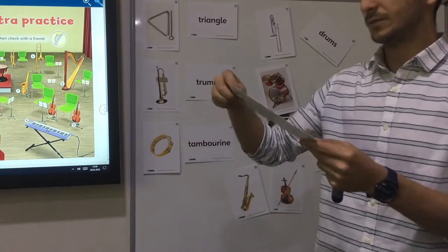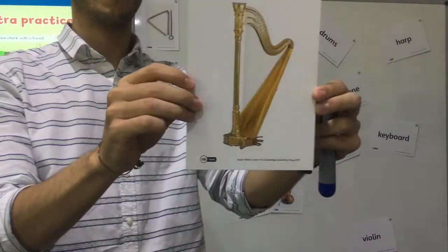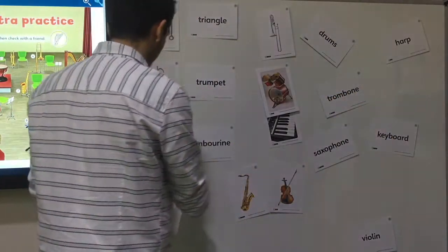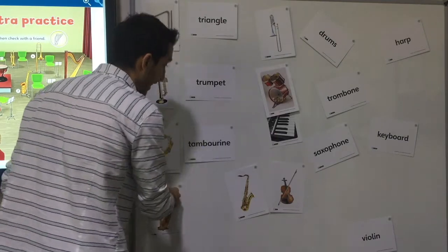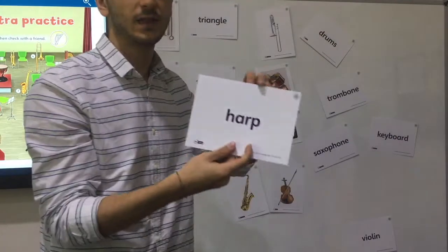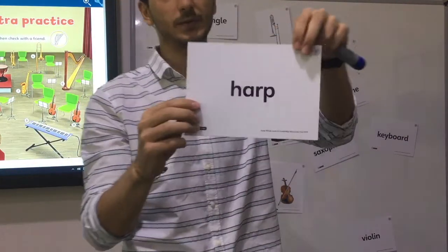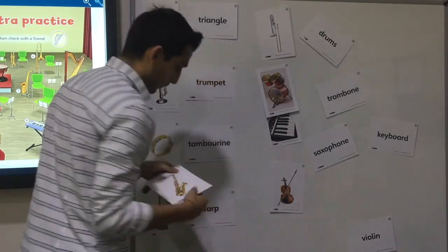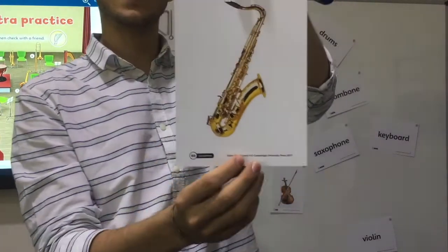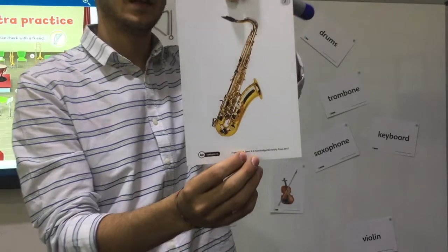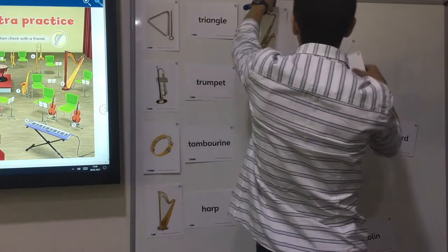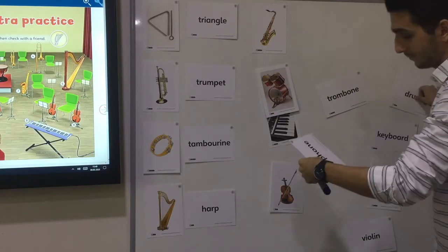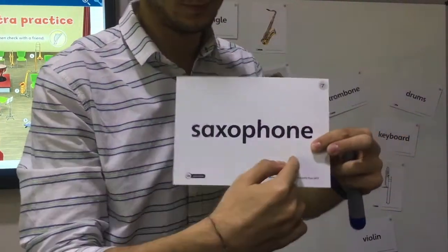And this one — what is that? It is harp. H-A-R-P. But the R sound is silent — harp. What is the next? It's a saxophone. Yes, it is a saxophone.